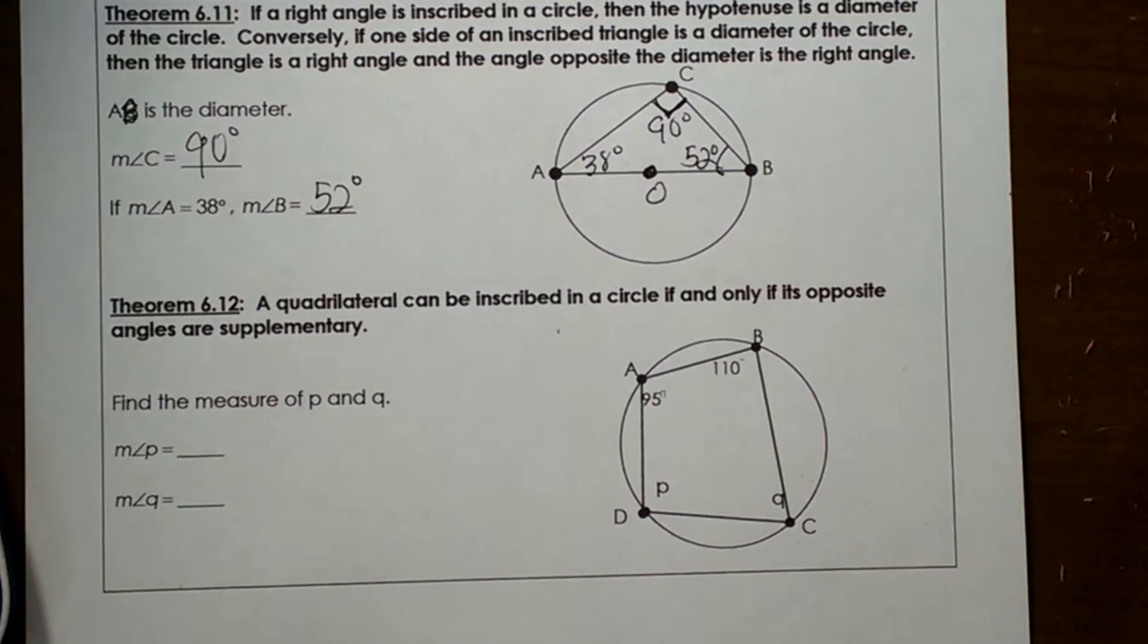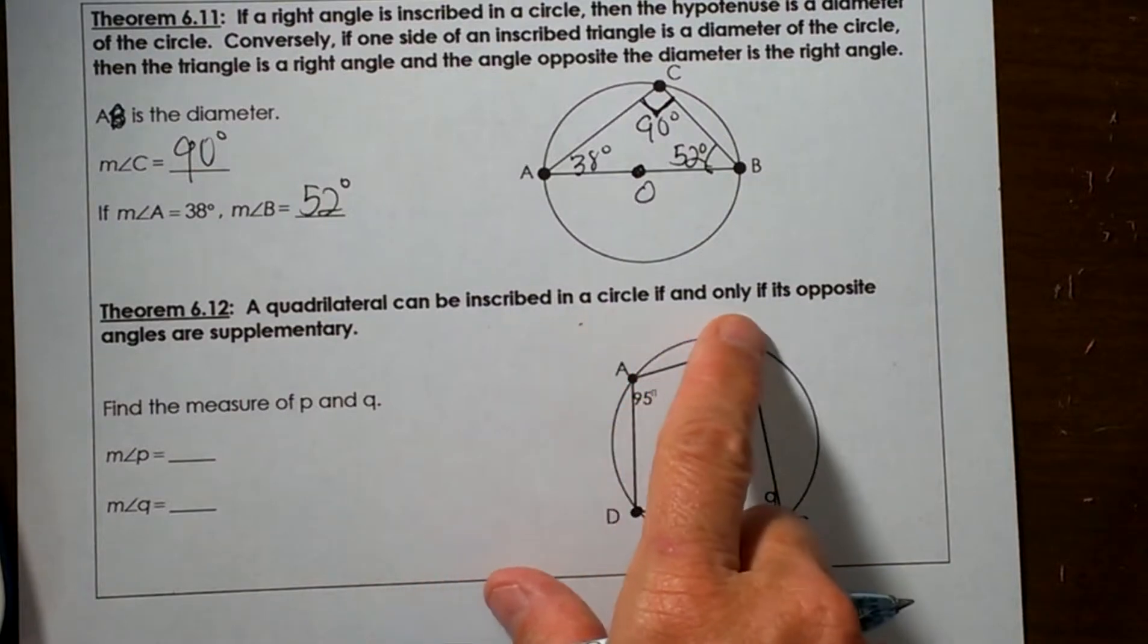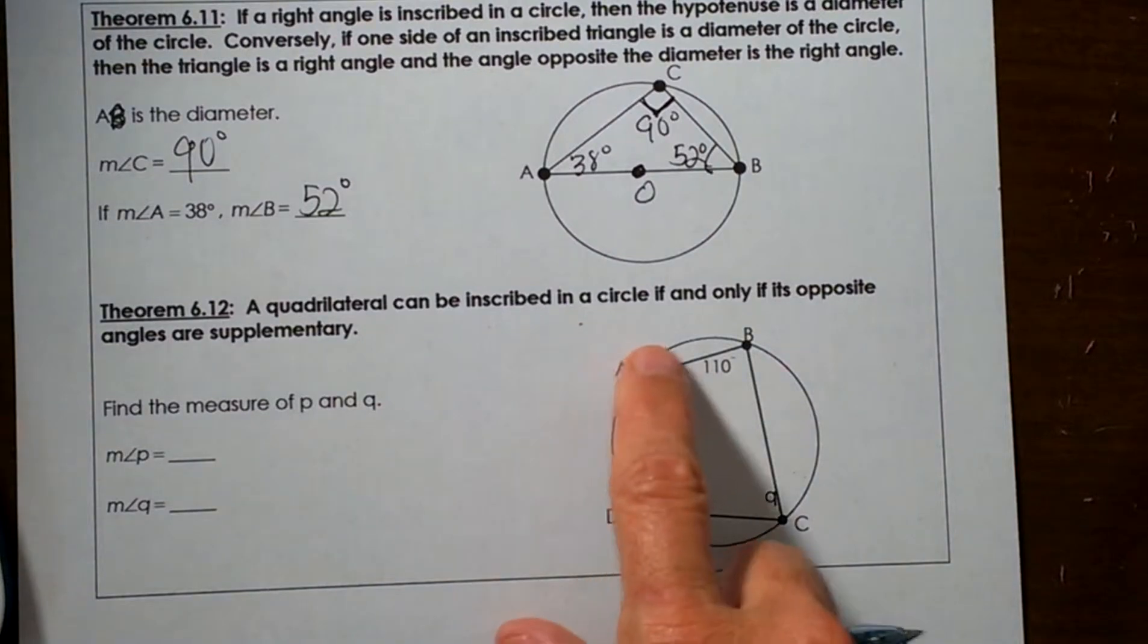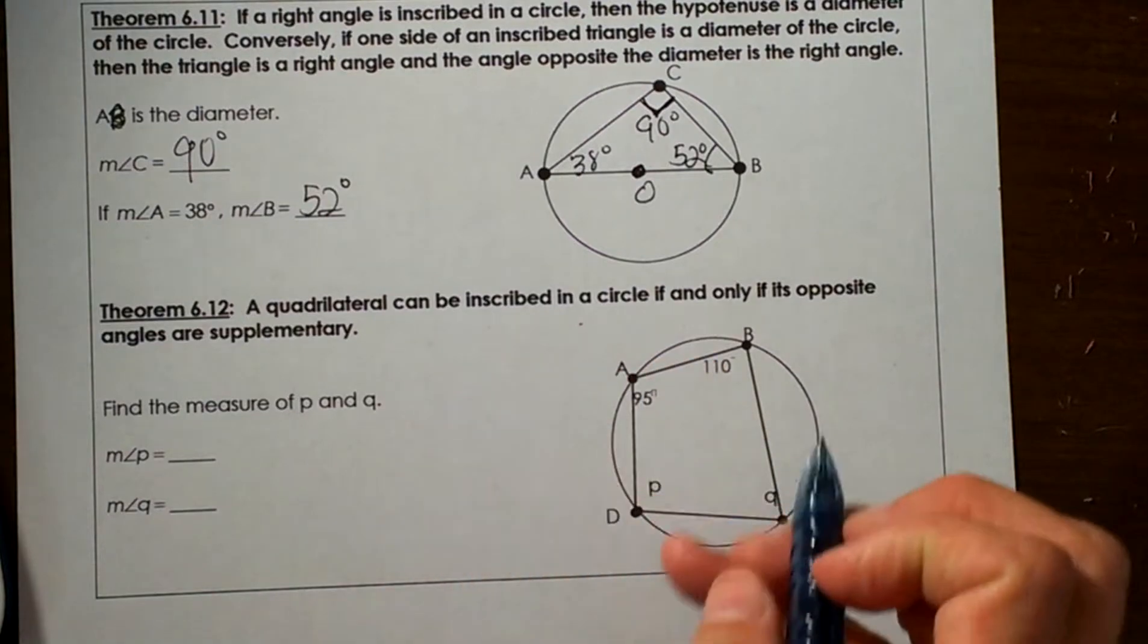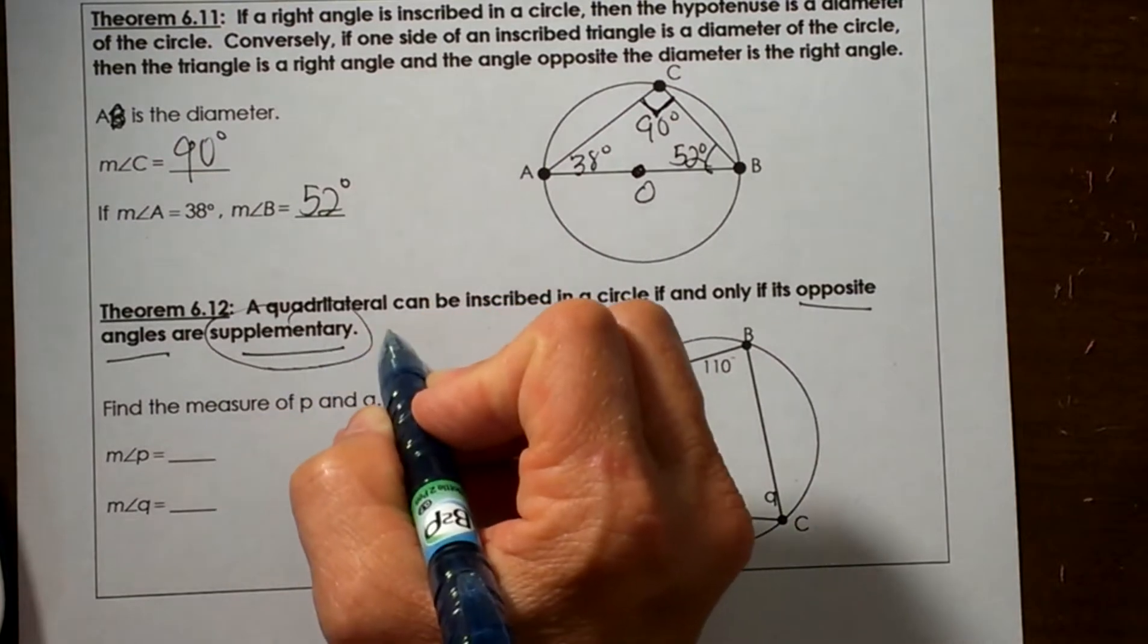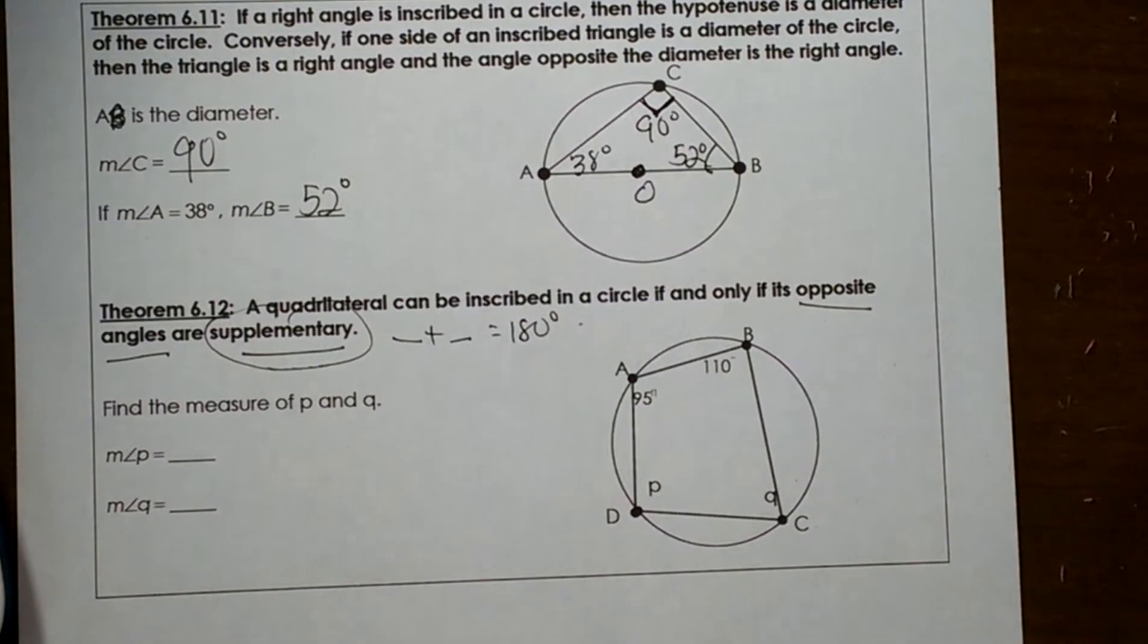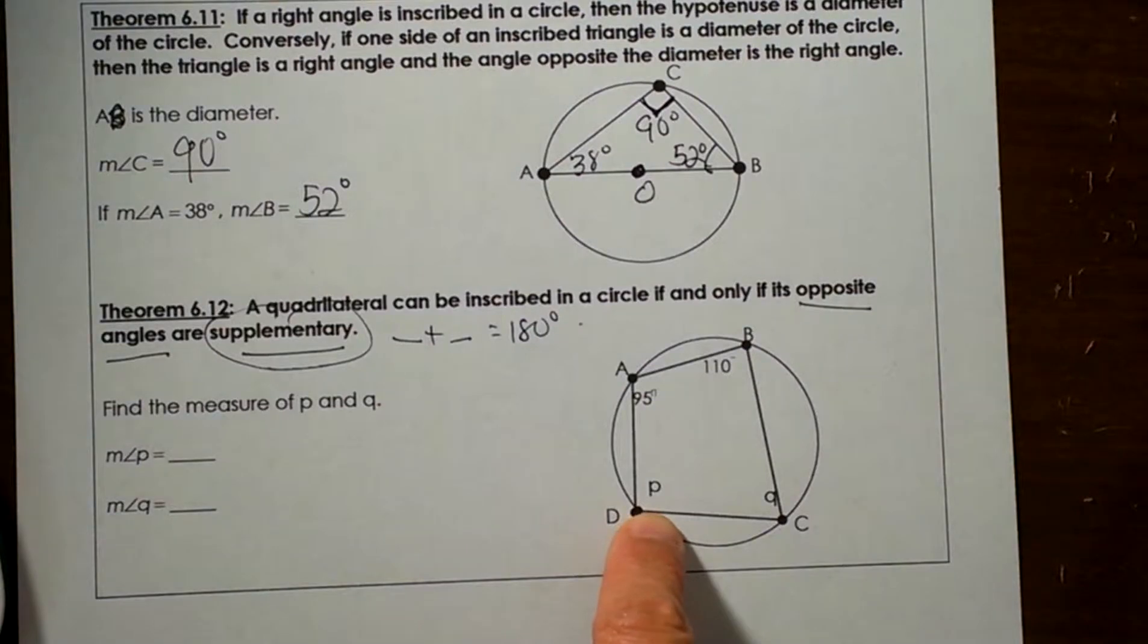Okay, let's look at theorem 6.12. A quadrilateral can be inscribed in a circle if and only if its opposite angles are supplementary. So we have a quadrilateral. Inscribed means all the corners, or all the vertices of this quadrilateral, actually lie on the circle. And that means that the opposite angles are supplementary. Well, supplementary means two angles add up to 180, and they have to be opposite. So angle B is opposite angle D, or P in this case.